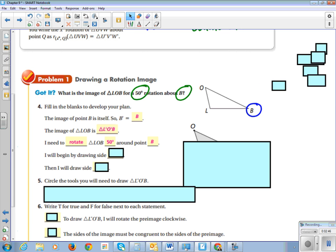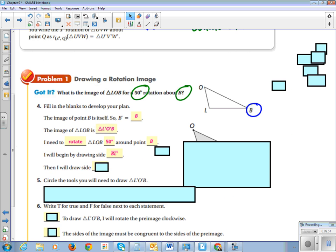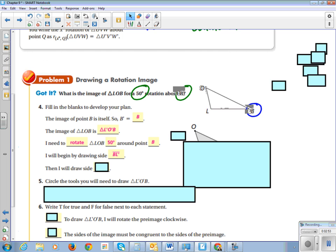So we are going to rotate triangle LOB 50 degrees around point B. So I'll begin by drawing the side, BL prime.